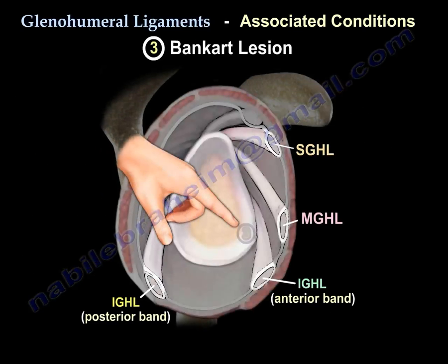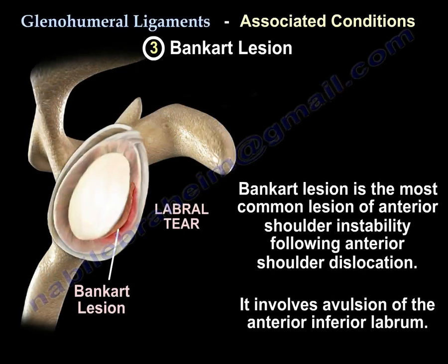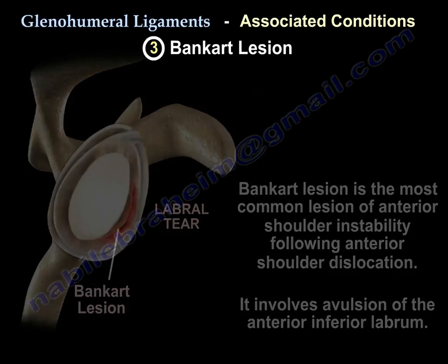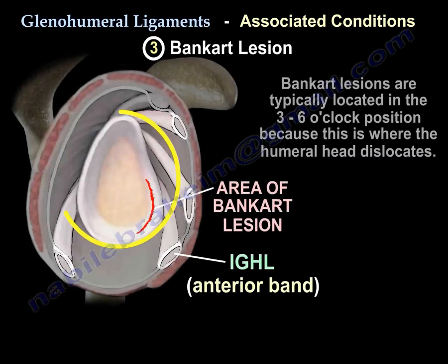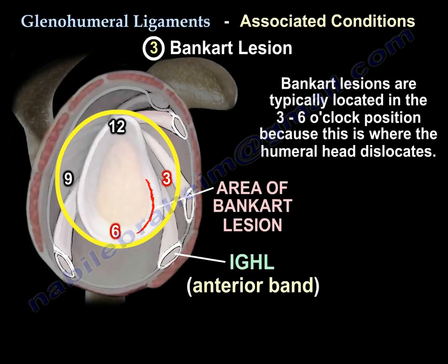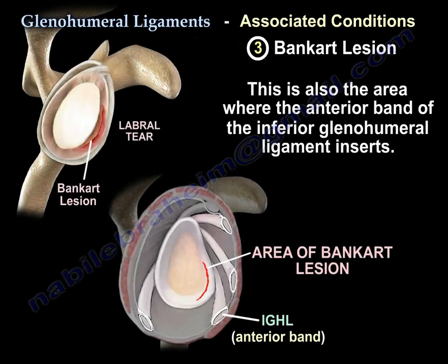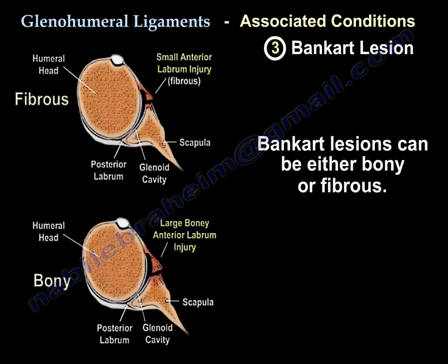The inferior glenohumeral ligament anterior band is associated with the Bankart lesion. The Bankart lesion is the most common lesion of anterior shoulder instability following anterior shoulder dislocation. It involves avulsion of the anterior inferior labrum. Bankart lesions are typically located in the 3 to 6 o'clock position, where the humeral head dislocates and where the anterior band of the inferior glenohumeral ligament inserts. Bankart lesions can be either bony or fibrous.